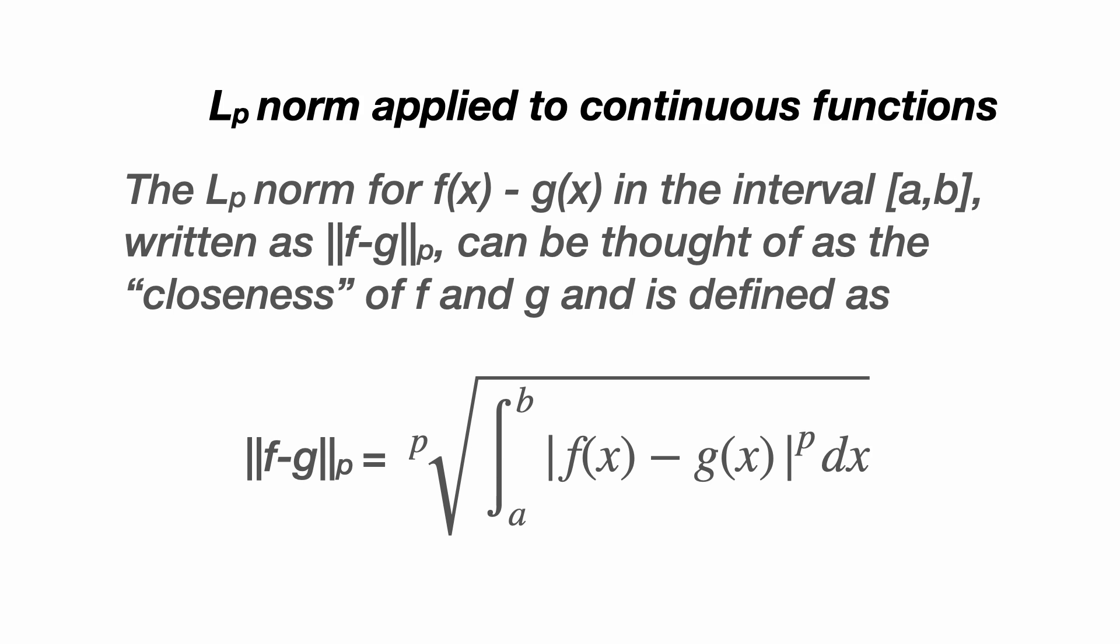We take the absolute value of f minus g, raise this to the pth power and integrate from a to b. We then take the pth root at the end.